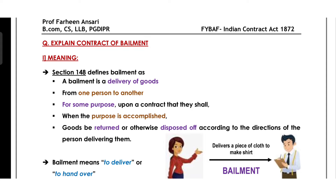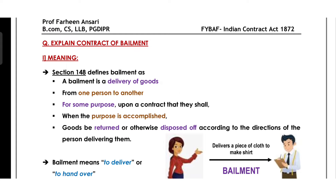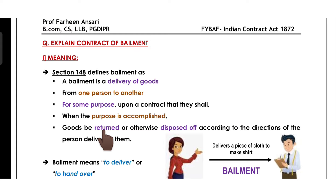To begin with, let's first understand the simple meaning of bailment. In simple words, bailment means to deliver or hand over something to some other person. In fact, Section 148 has defined it in a very simple way, which states that bailment means to deliver the goods from one person to another, for some specific purpose. And when this purpose becomes complete, either the goods will return to the person who delivered them, or be disposed of as per that person's direction.